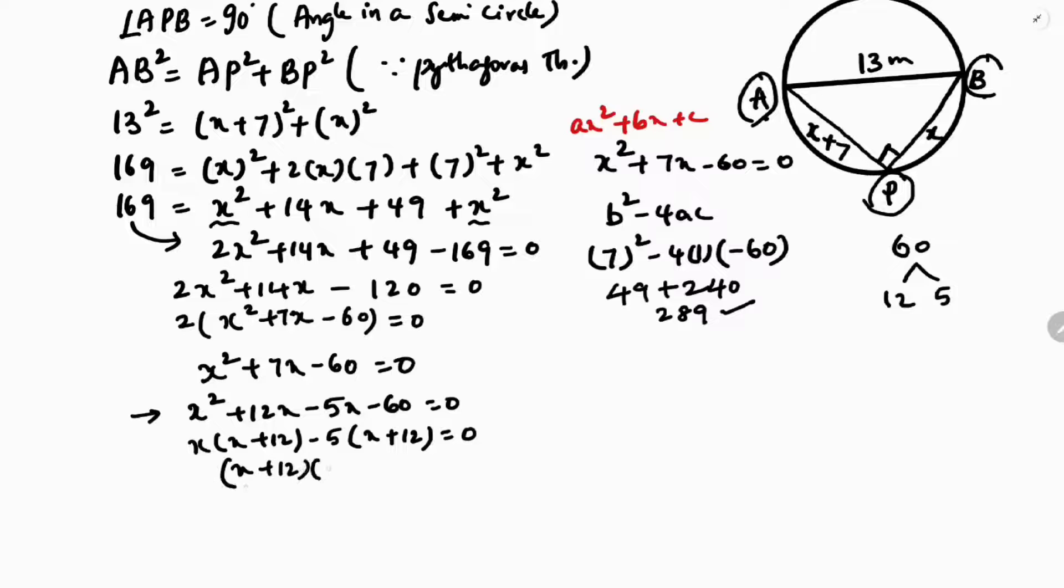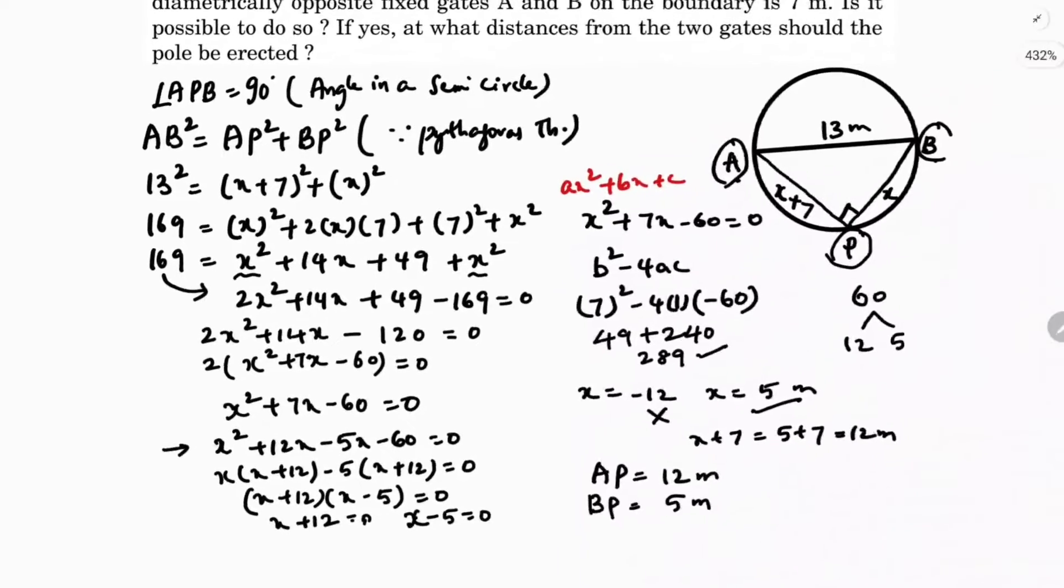X plus 12 into X minus 5. X plus 12 equals 0 and X minus 5 equals 0, so X equals minus 12, X equals 5. Side cannot be negative, so the value of X is 5. So X plus 7 is 5 plus 7, which is nothing but 12 meters. So AP is 12 meters, BP is 5 meters. So in this way we need to find this.